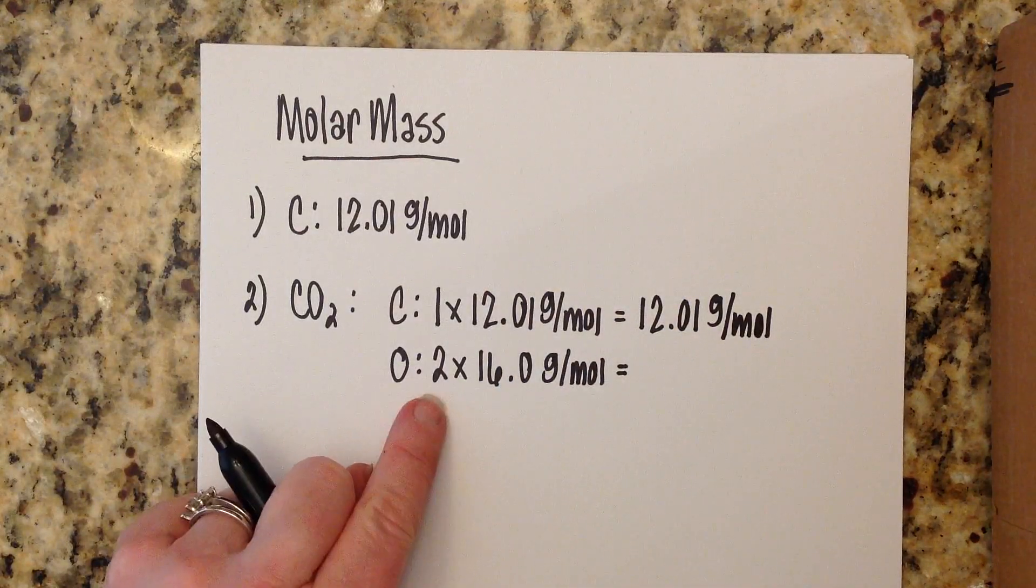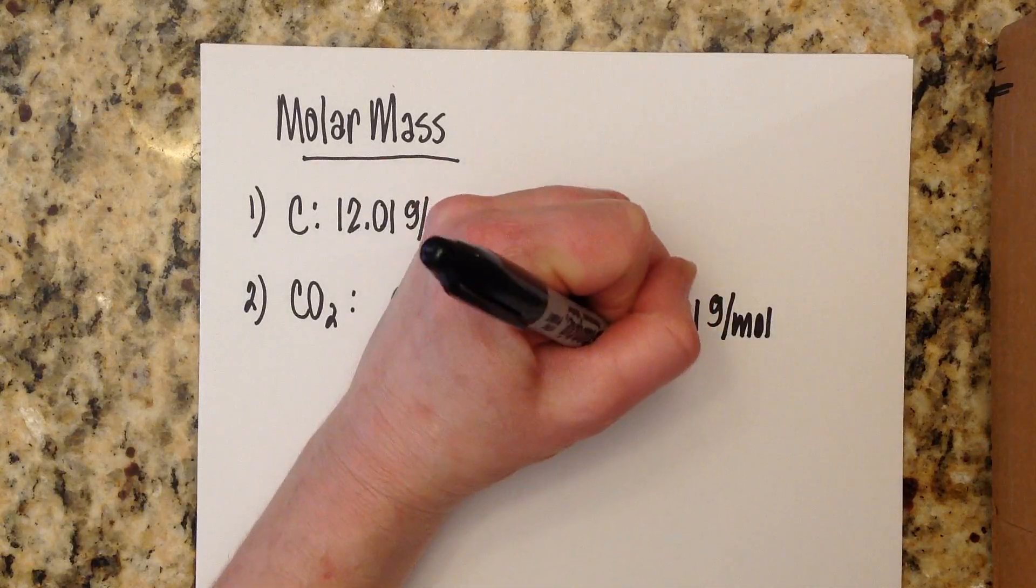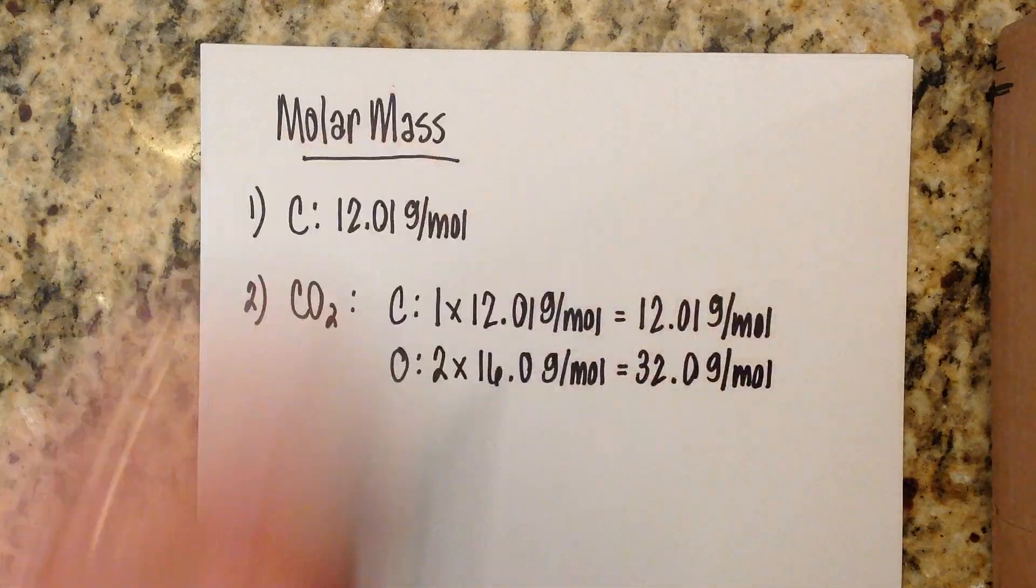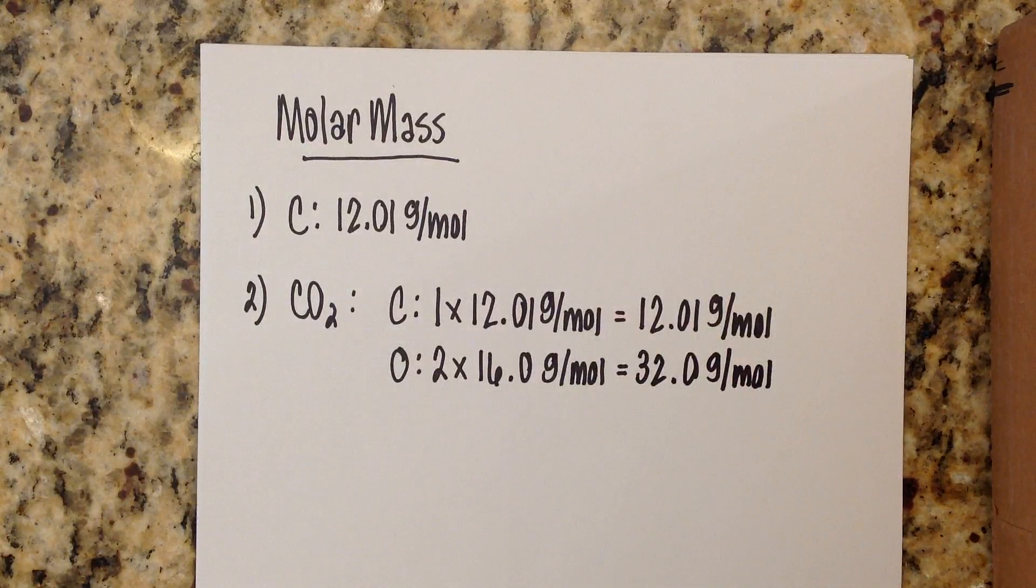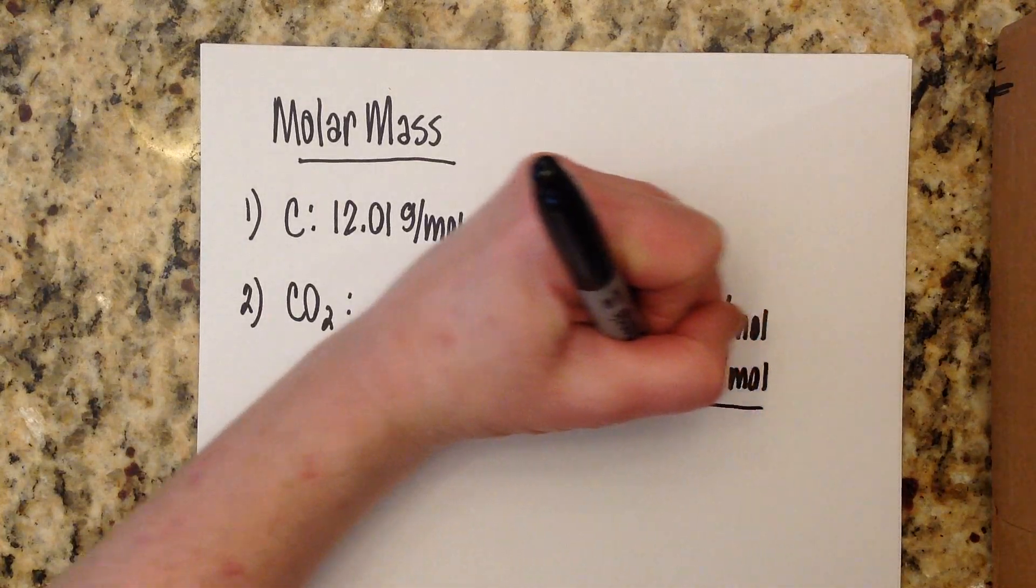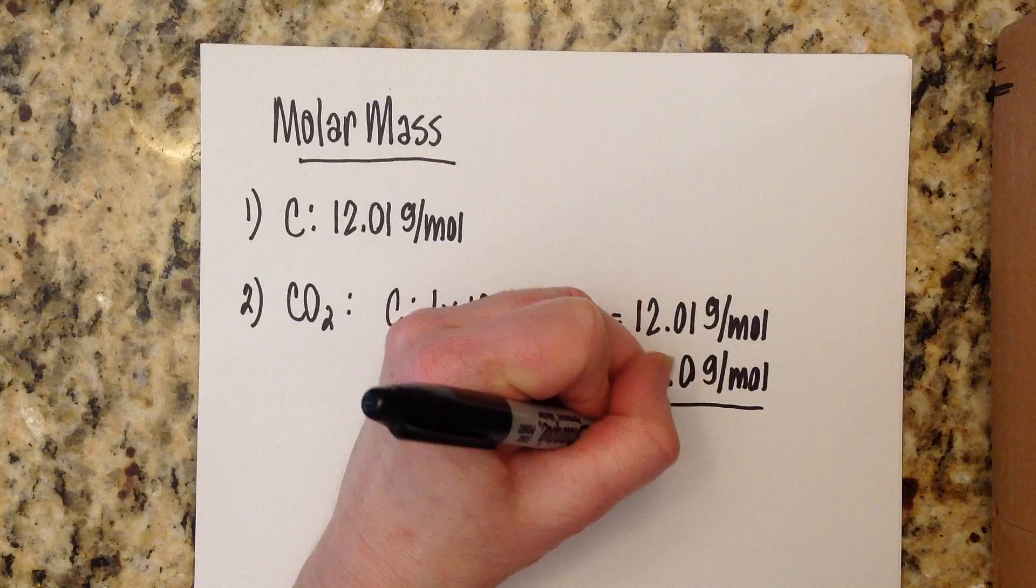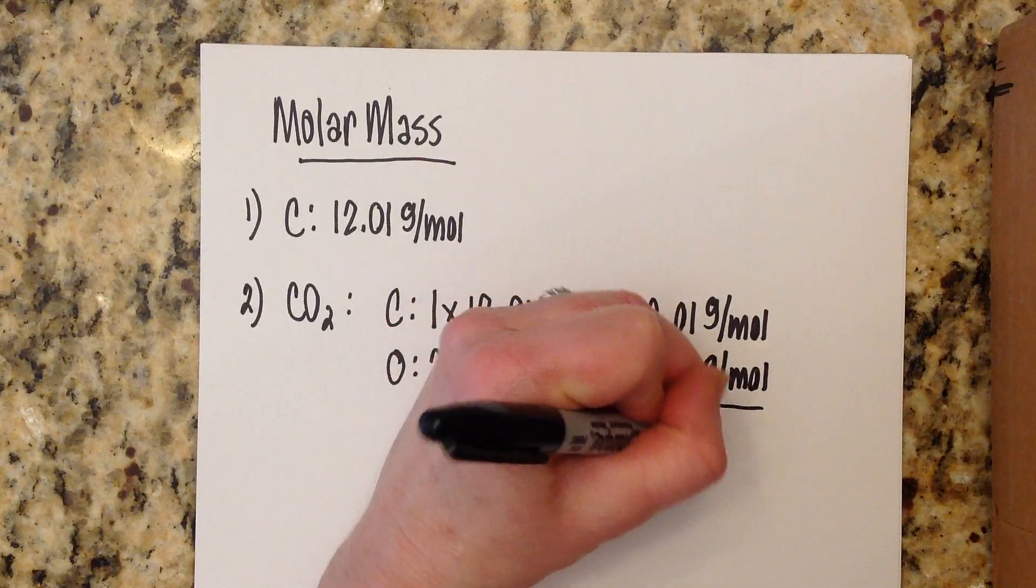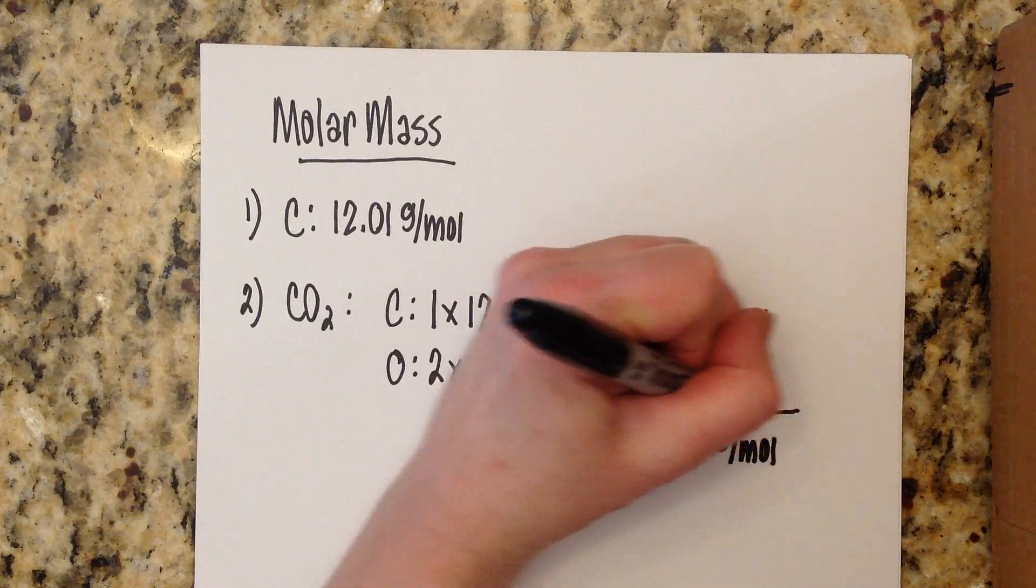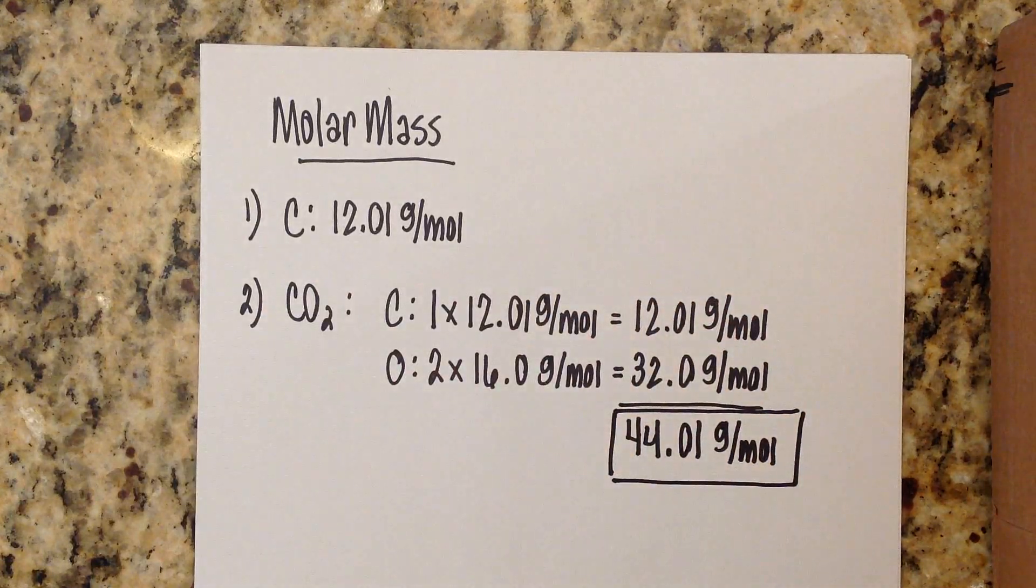Now we're going to tally those up. If you have one carbon that has a molar mass of 12.01 grams per mole, that's a total mass of 12.01 grams per mole. Oxygen, if you have two of those and each of those has a mass of 16 grams per mole, that's a total of 32 grams per mole. Now if you want to know the molar mass of the entire molecule, all you have to do is add those two numbers together, and that is going to give you 44.01 grams per mole. Once you have this answer, you have solved for the molar mass of carbon dioxide.